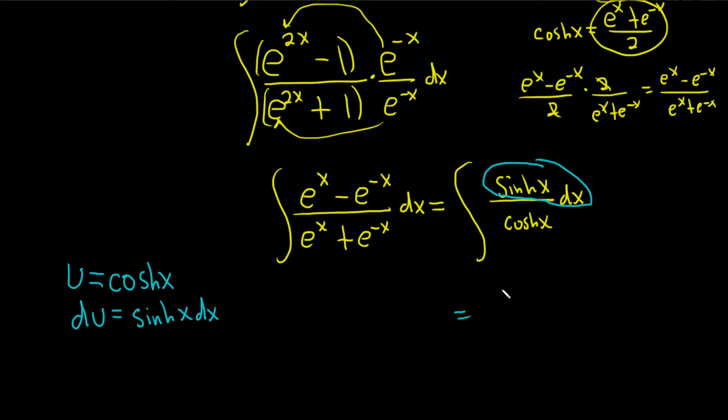So this is du over u. And that's a very popular formula. Well, this is the natural log of the absolute value of u plus a constant. And so this is equal to the natural log of, well, what was u? u was cosh. But cosh is always positive, so we don't even need the absolute value. So cosh of x plus capital C.